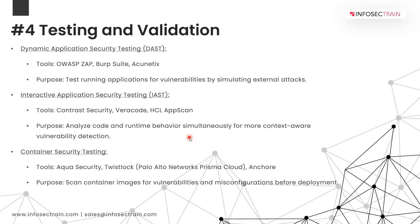In the testing and validation stage, we have Dynamic Application Security Testing — DAST — where we run tests on a running application, working like a penetration tester. Tools include OWASP ZAP, Burp Suite, and Acunetix. We also have IAST — Interactive Application Security Testing — using tools like Contrast Security, Veracode, and HCL AppScan. IAST combines SAST and DAST, performing both code scanning and runtime behavior analysis simultaneously.